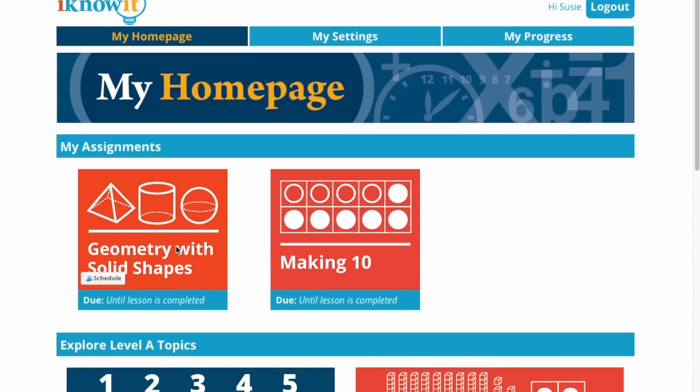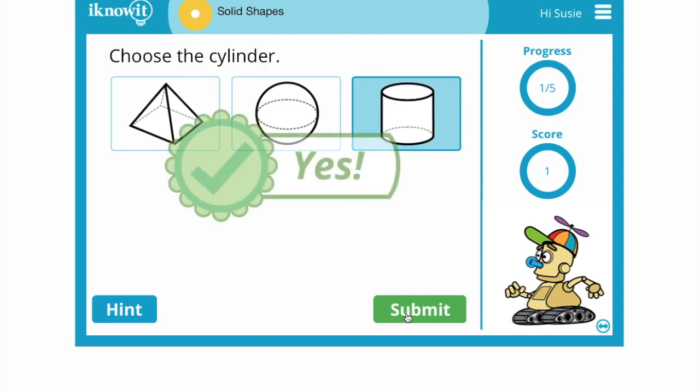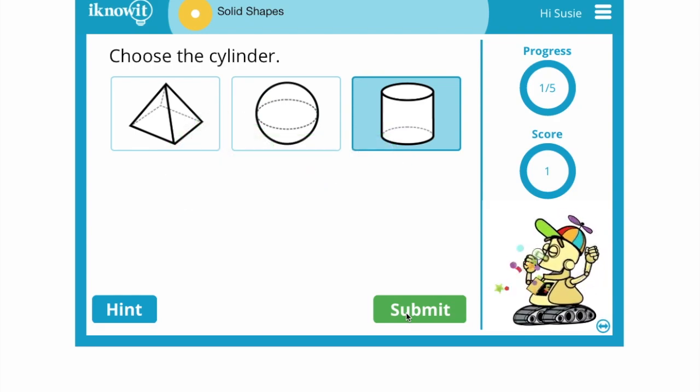So I'm going to show you what happens when you go into a lesson. So here is something about solid shapes. So choose a cylinder. And what's great about this is students have a variety of questions where you can just click on the one that is correct, like multiple choice. They also have click and drag and fill in the answer. So they have a variety of choices.